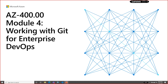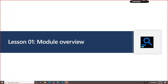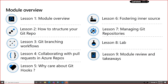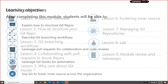This is the fourth module for AC400. In this module we are going to talk about how to structure your git repository, what is the git branching workflow, how you can collaborate with pull requests into Azure Repos. I have shown you these things before — how you can design a branching strategy, create a pull request, fork your repository, and manage the git repository.